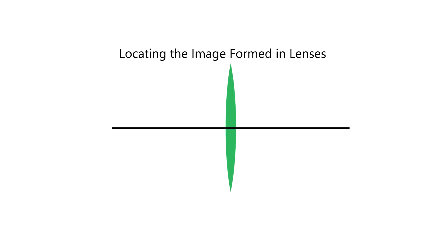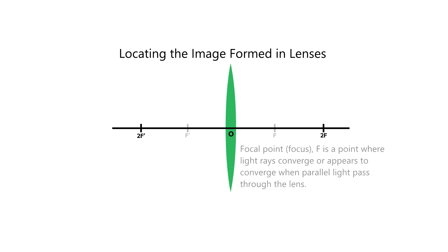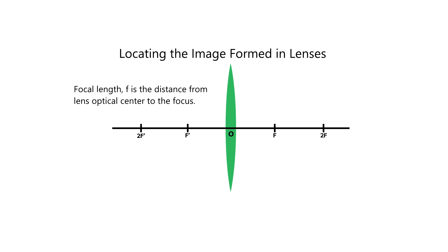The two centers of curvature in lenses are called the 2F. The optical center is the geometric center of the lens. The focal point or focus is a point where light rays converge or appear to converge when parallel light rays pass through the lens. The focal length is the distance from the lens optical center to the focus.